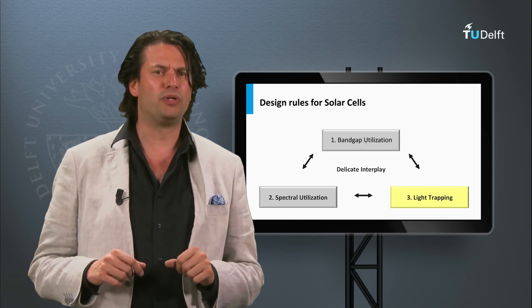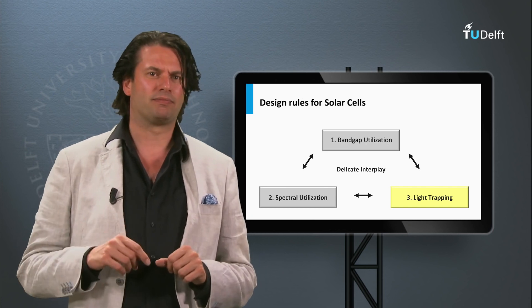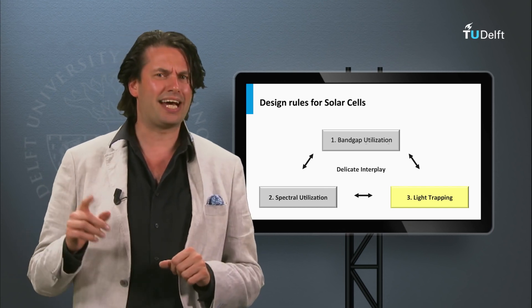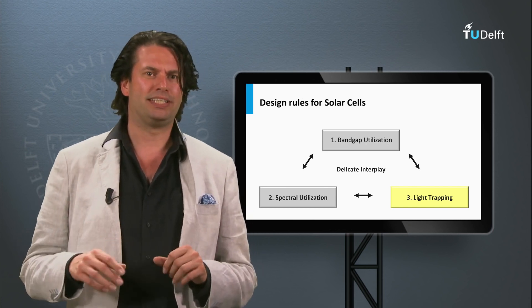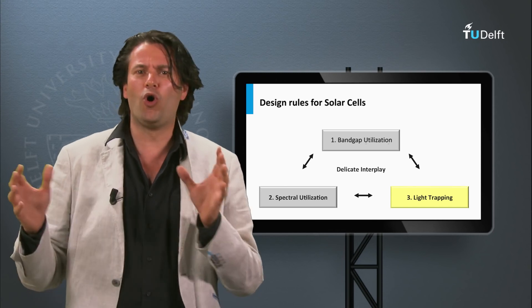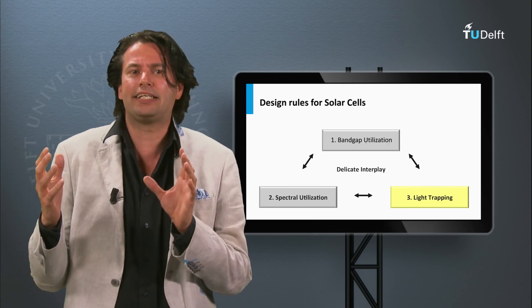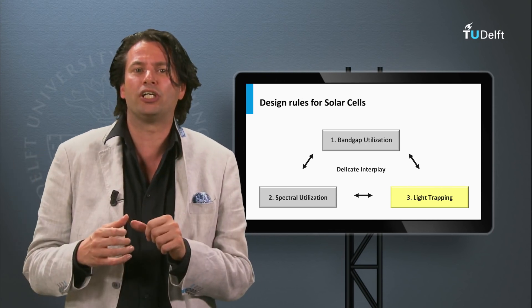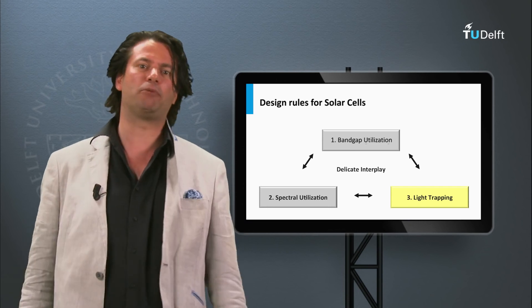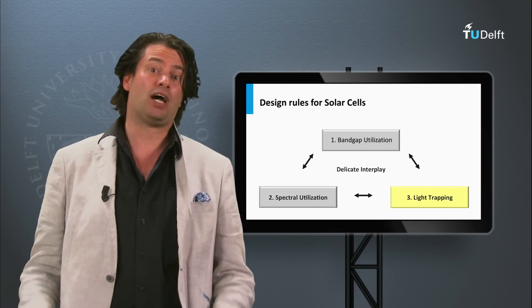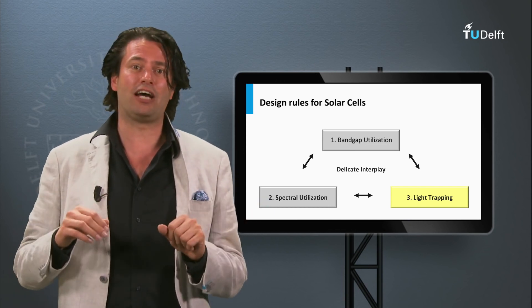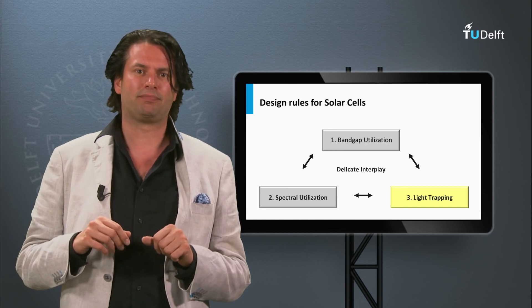The last engineering tool is light trapping. In the ideal solar cell, we want all light that is incident on the solar cell to be absorbed in the absorber layer. However, nature has not made our life that easy.